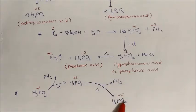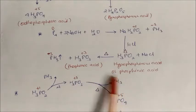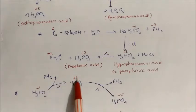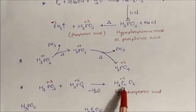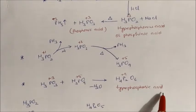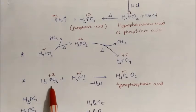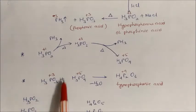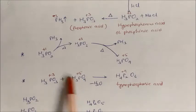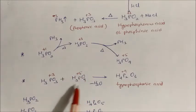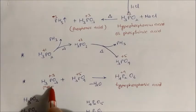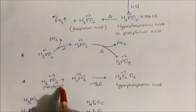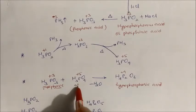The oxidation states in the phosphorus oxy acids include plus one, plus three, and plus four. One more acid we have is H₄P₂O₆, called hypophosphoric acid. To clarify: this is phosphonic acid and this is orthophosphoric acid — four oxygens versus three oxygens for phosphinic acid.